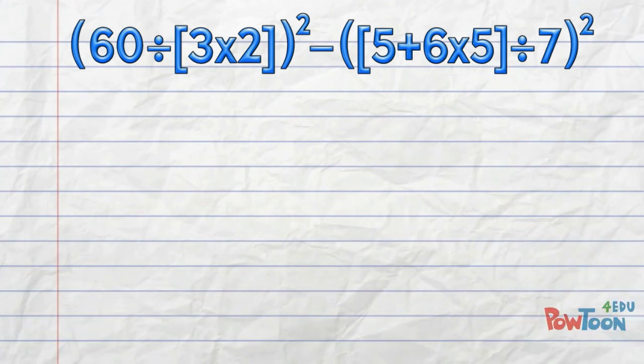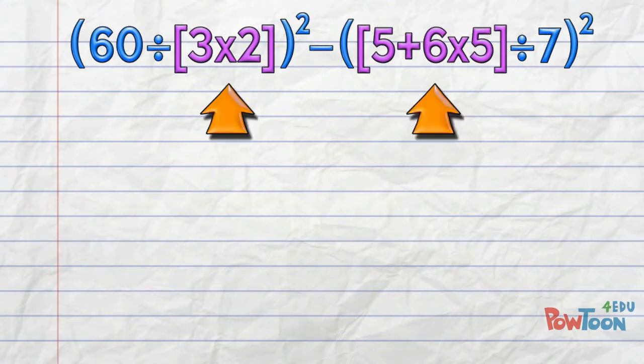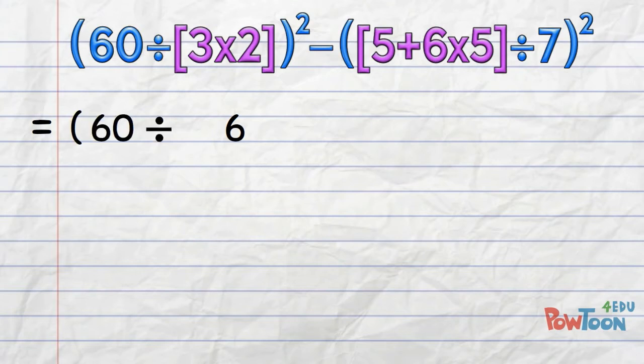Brackets first! We have two sets of nested brackets. Start here with these inner brackets: 3 times 2 is 6, and the inner brackets are done! Let's put in the rest of the terms in that bracket group, including the exponent that belongs with it.